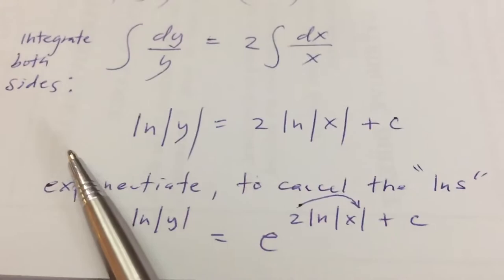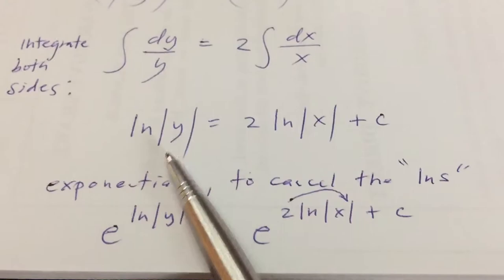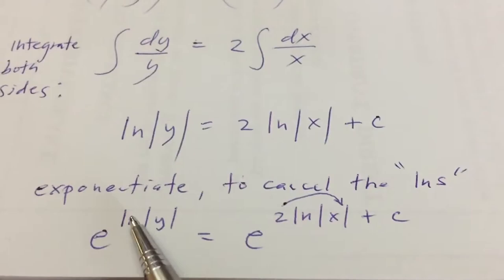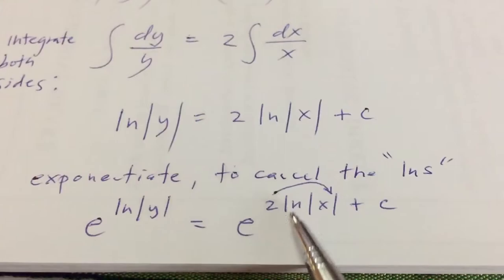In this step, we're going to exponentiate to cancel the ln's. Because e raised to ln is equivalent to 1, we exponentiate both sides of the equation.